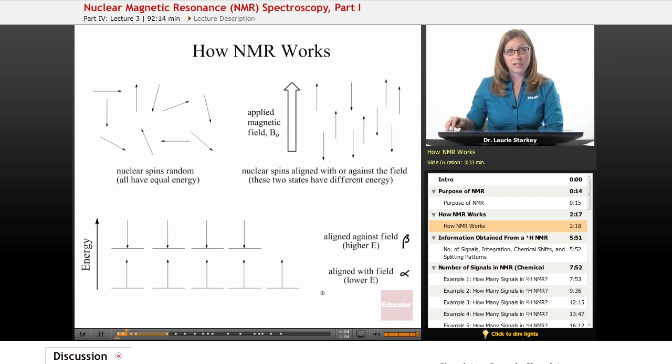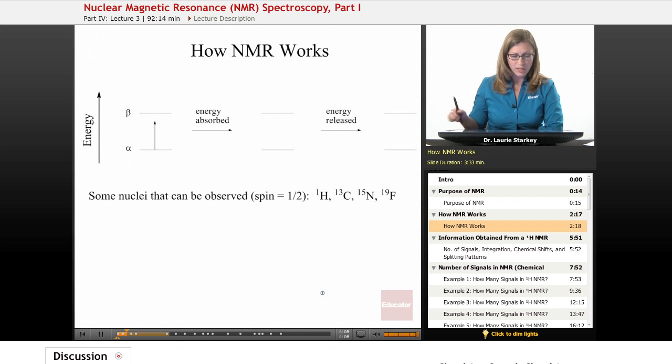After placing our sample in the magnet, we're going to pulse it with some energy—that radio frequency energy—and some of that energy is going to be absorbed in certain situations. What's going to happen is we are going to induce a spin flip in which a nucleus that is aligned with the field is going to accept and absorb that energy—we call that resonating—and it's going to now have the beta spin state. It's going to be higher in energy.